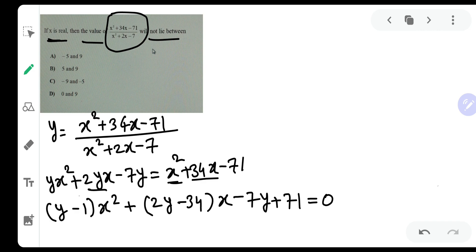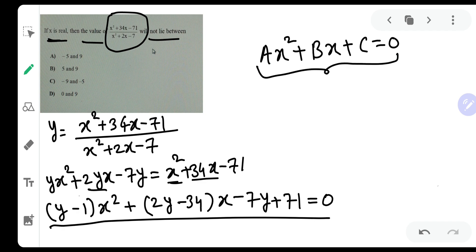Now can you observe this very carefully? Doesn't it look like ax square plus bx plus c equal to 0? Now this is a quadratic equation in x. So definitely it will have two roots of x. These roots can be both real or both imaginary or both equal. Now they have given us that x is real.